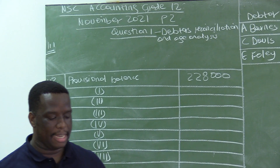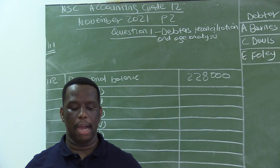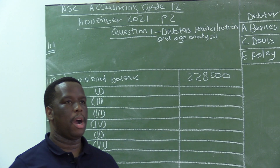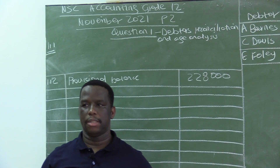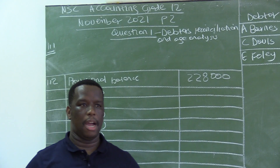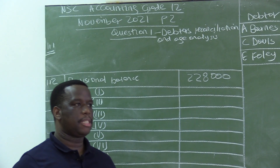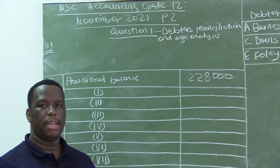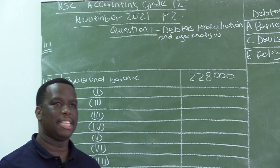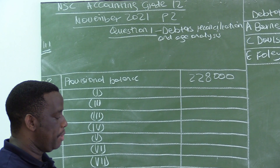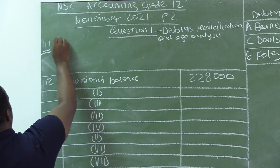We are required to provide two documents that Zigzag Traders will need from potential debtors before they are allowed to open accounts. When you are selling on credit and opening accounts for your customers, you don't just do that haphazardly. You cannot just give credit to anyone — there are processes that need to be followed, and the business will require certain documents.